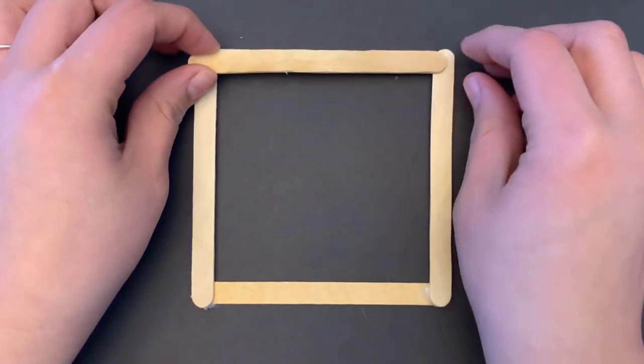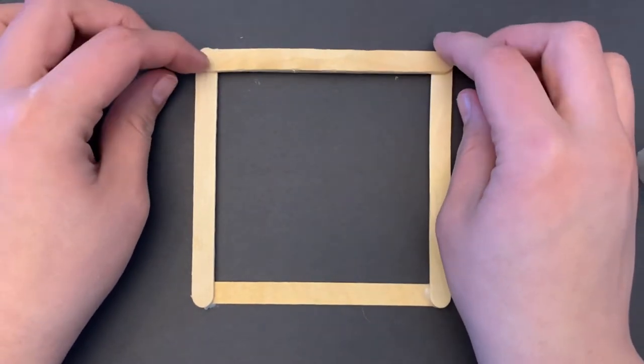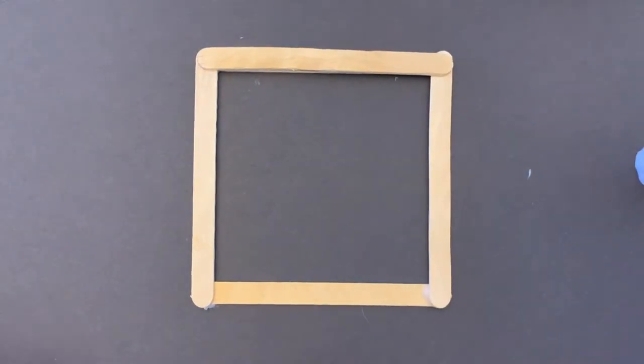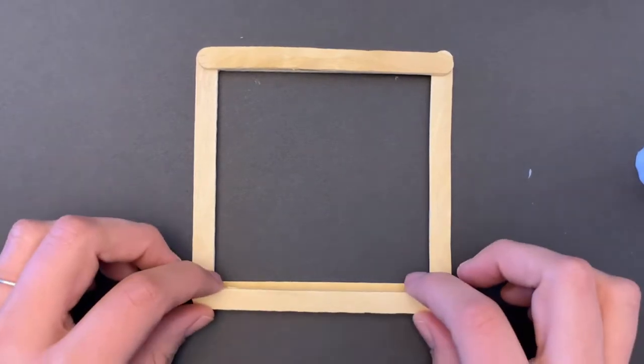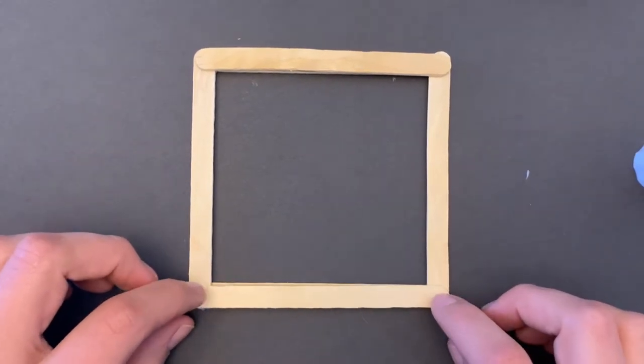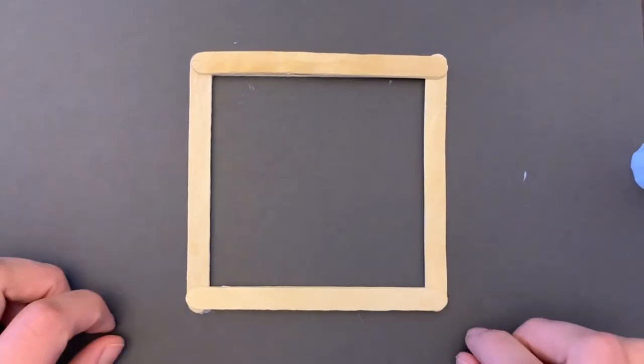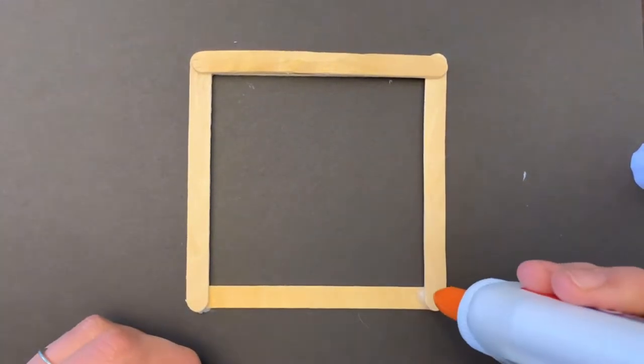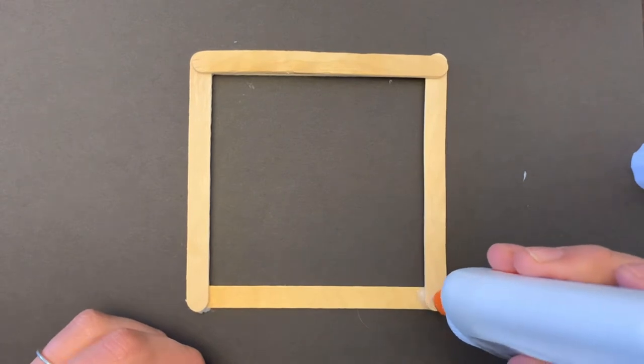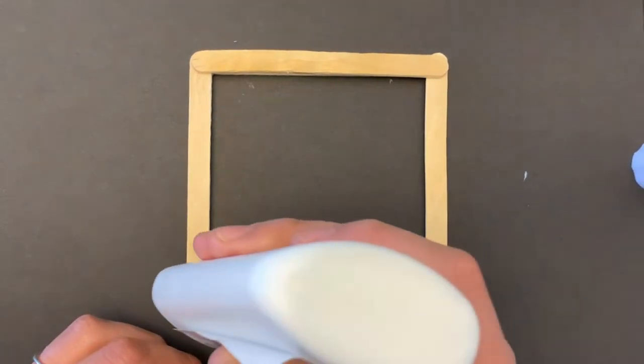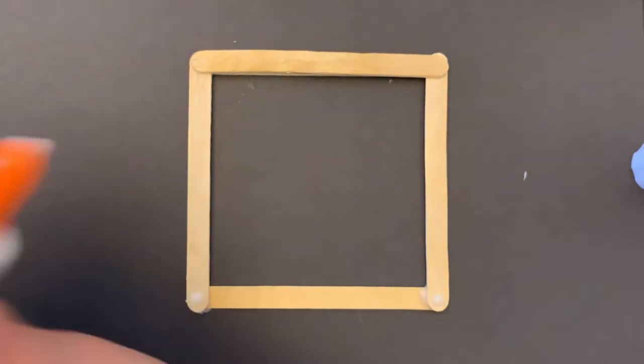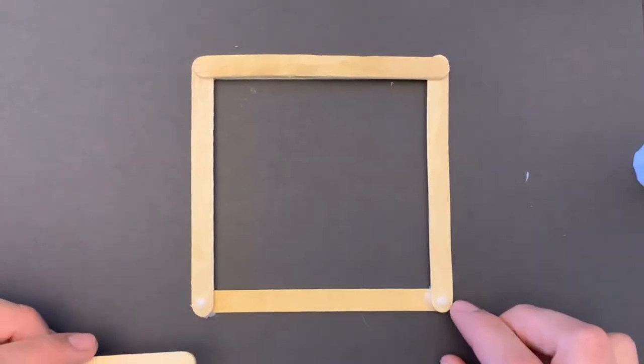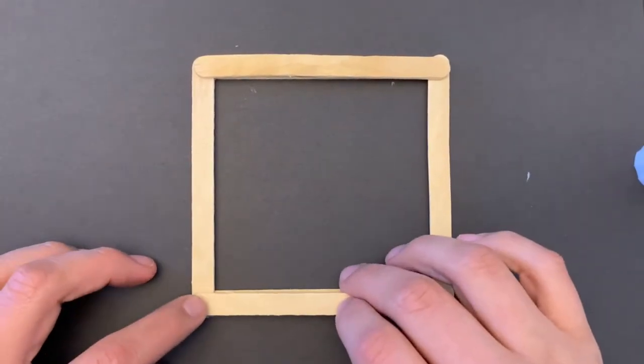This next part, after we have our square shape, is to then place two more on top just as I'm doing to make this little frame shape. Put some extra glue to make sure that we're gluing everything down. As soon as you're done with this shape, you have to put it off to the side so it can dry.